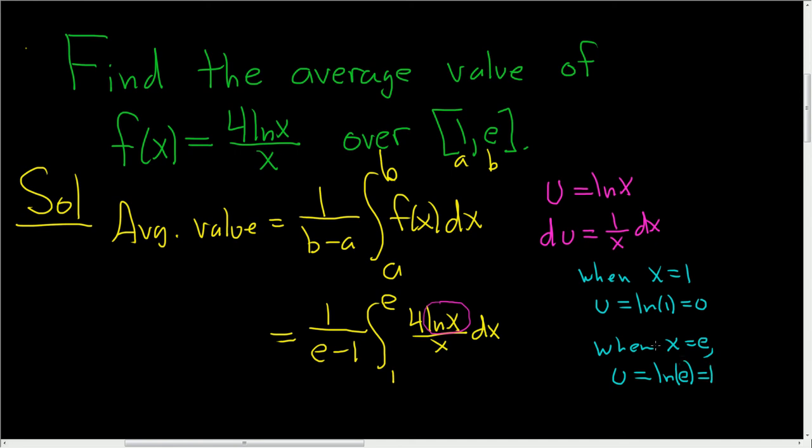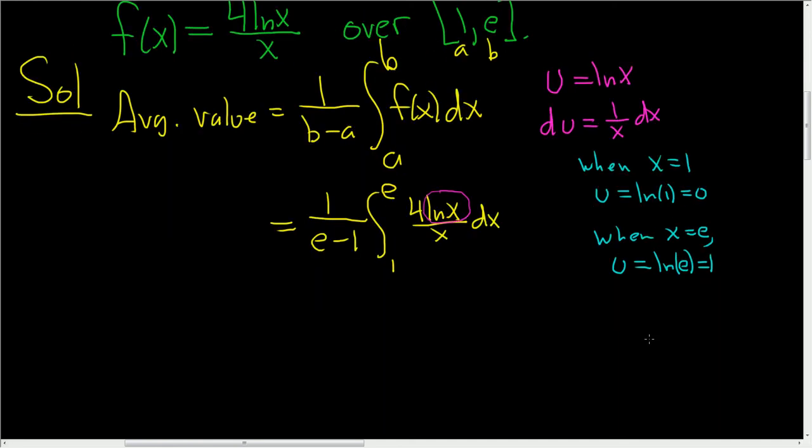Let's carefully rewrite what we have. So this is equal to 1 over e minus 1, and we have the integral sign. When x is 1, u was 0, so this becomes a 0.